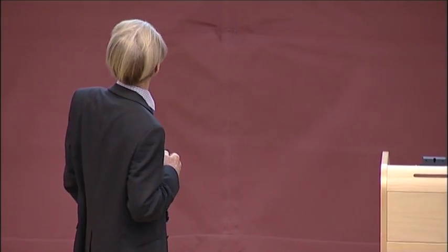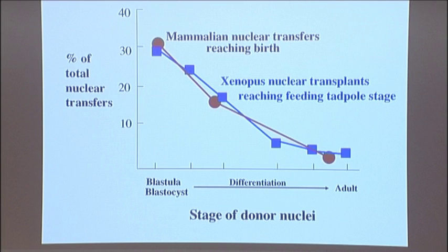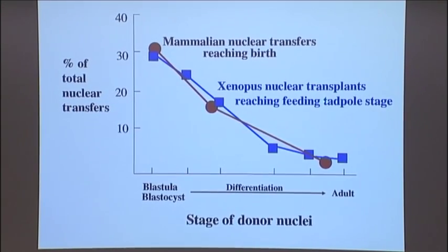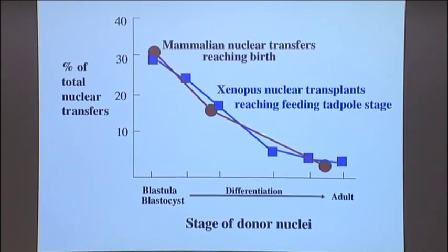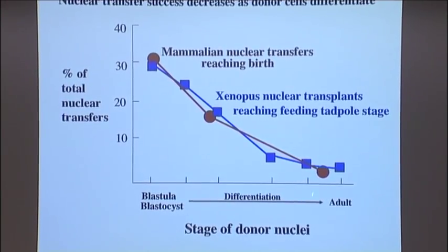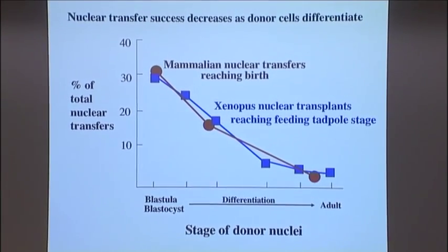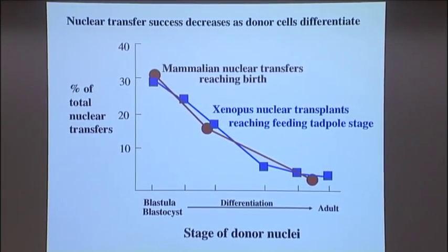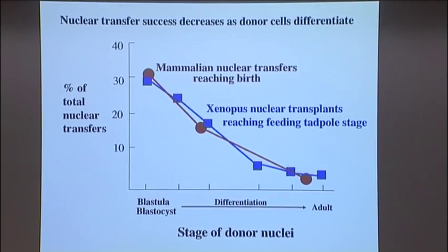The work with amphibians and mammals is extraordinarily similar. When you start with a nucleus from an embryo cell — whether judged by mammalian nuclear transfers that reach birth, or Xenopus nuclear transfers that reach feeding tadpole stage — the results are about the same. There is reprogramming, but there is very considerable resistance: as cells differentiate, their nuclei become increasingly reluctant to be made to change.